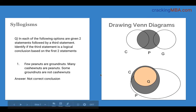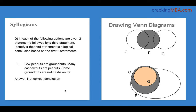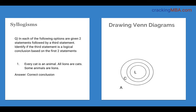Next question: few peanuts are groundnuts, many cashew nuts are peanuts — is 'some groundnuts are not cashew nuts' a valid conclusion? In scenario 1, P and G have an intersection and C and P have an overlap, and we can see it may be true. However, in scenario 2, G is entirely within C, so all groundnuts are cashew nuts — making the statement 'some groundnuts are not cashew nuts' false. Since scenario 2 violates the conclusion, it is not a valid conclusion. Your conclusion must match all possible scenarios.